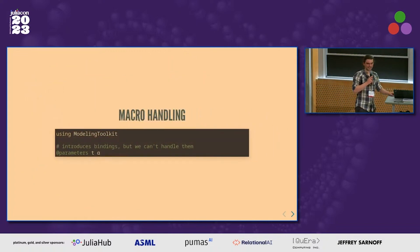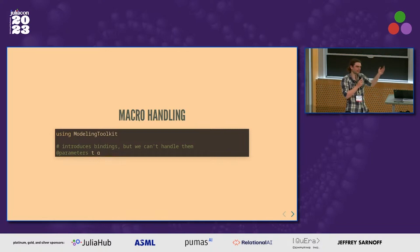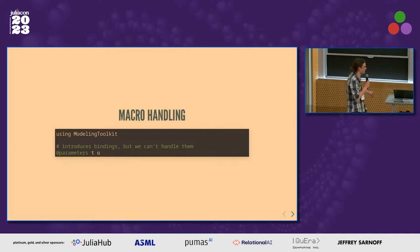Macro handling is tricky. I don't think we can do it correctly in the general case. But if you have, for example, the @add_parameters macro from ModelingToolkit, that introduces bindings which we should in theory be able to propagate through the rest of your code. In practice, we can't — we just give up, except for about three special-cased macros.